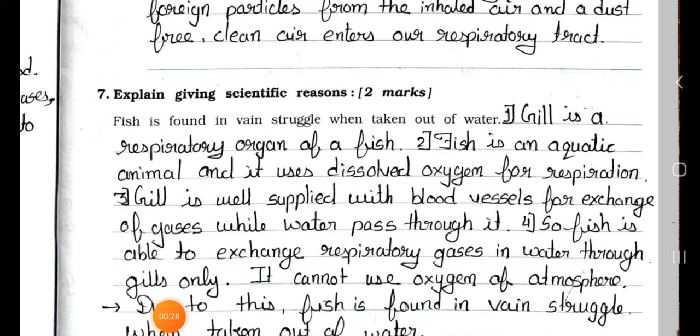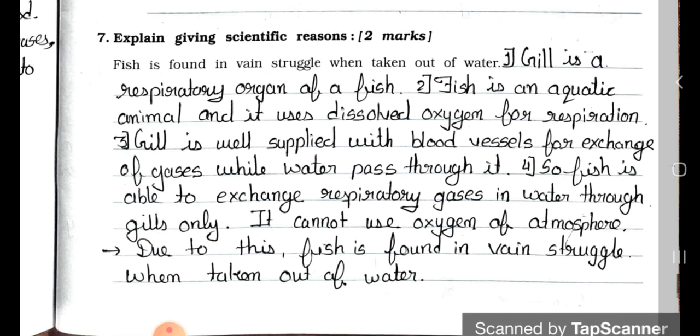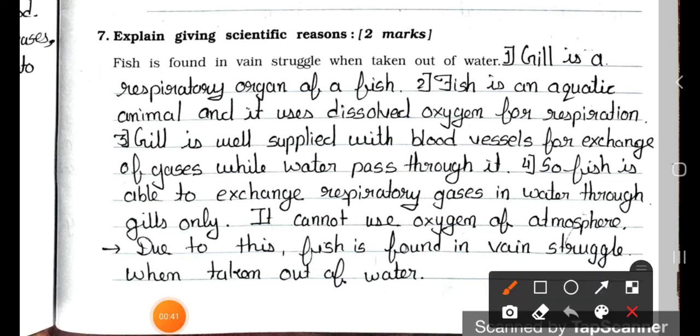Explain giving scientific reasons. It carries 2 marks. The question is: Fish is found in a vain struggle when taken out of water. See the answer. Gill is a respiratory organ of a fish. Fish is an aquatic animal and it uses dissolved oxygen for respiration. Gill is well supplied with blood vessels for exchange of gases while water passes through it. So fish is able to exchange respiratory gases in water through gills only. It cannot use oxygen of atmosphere. Due to this, fish is found in a vain struggle when taken out of water.